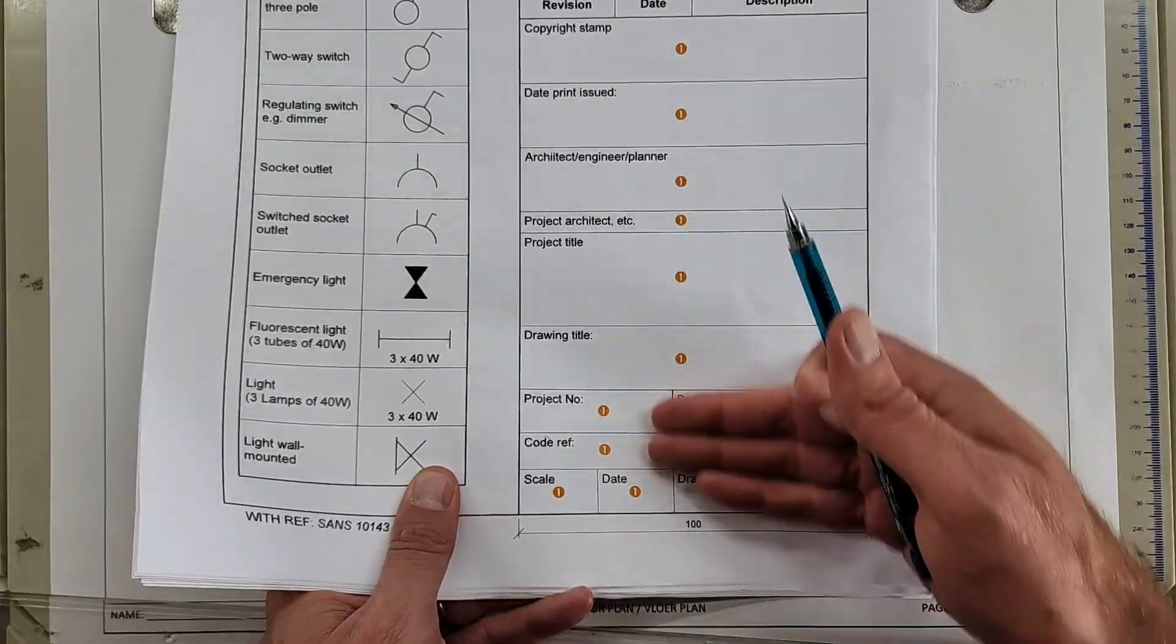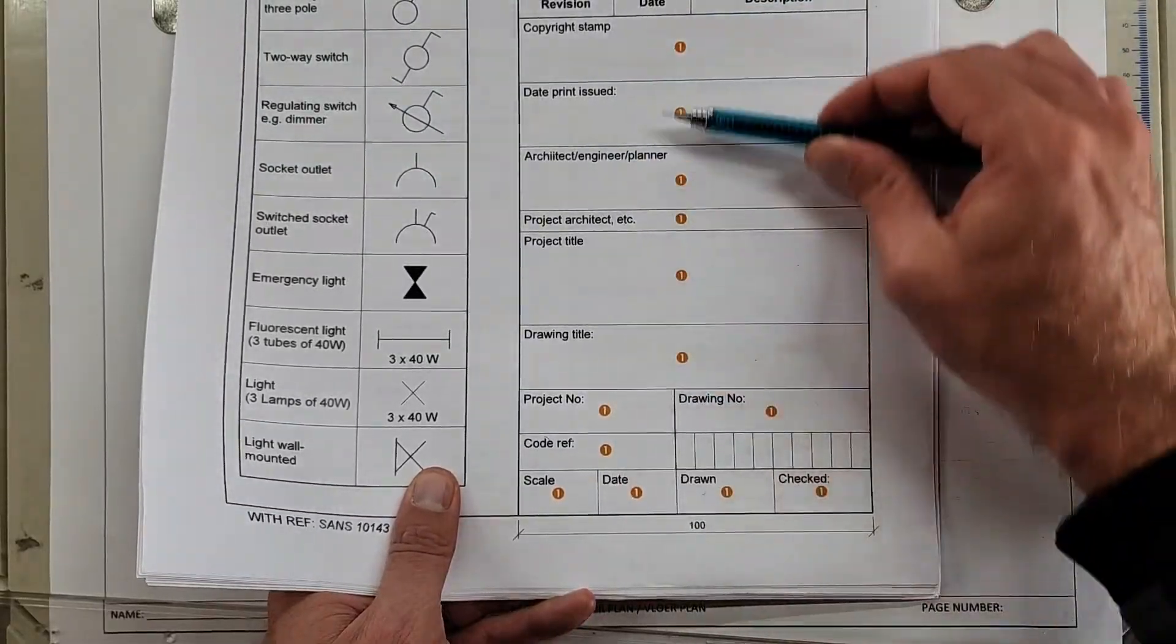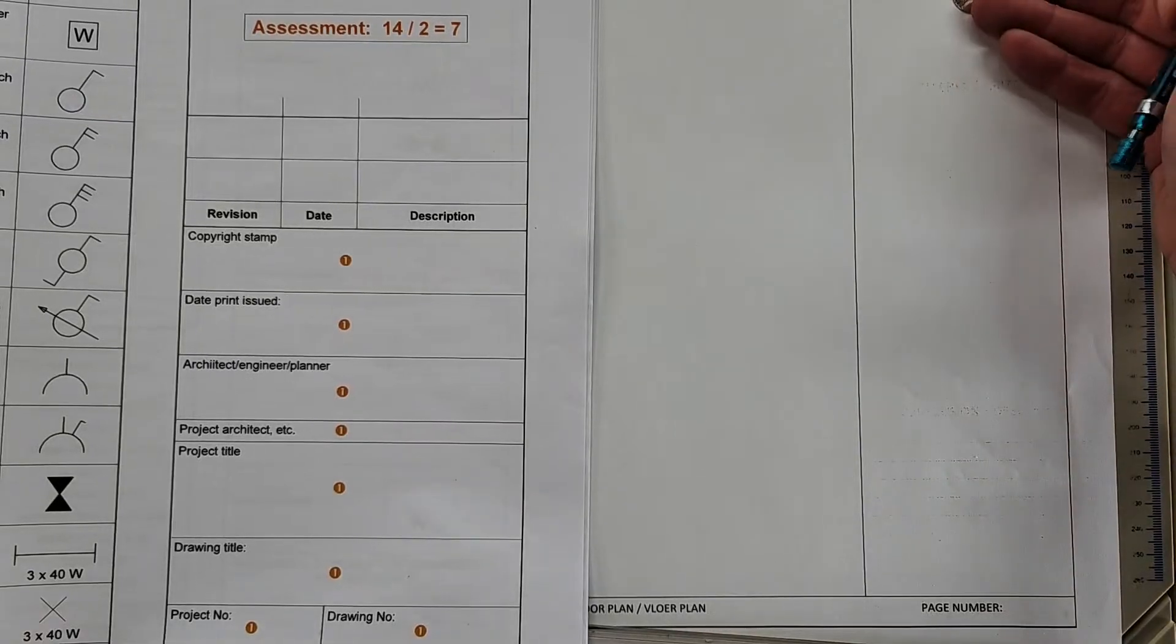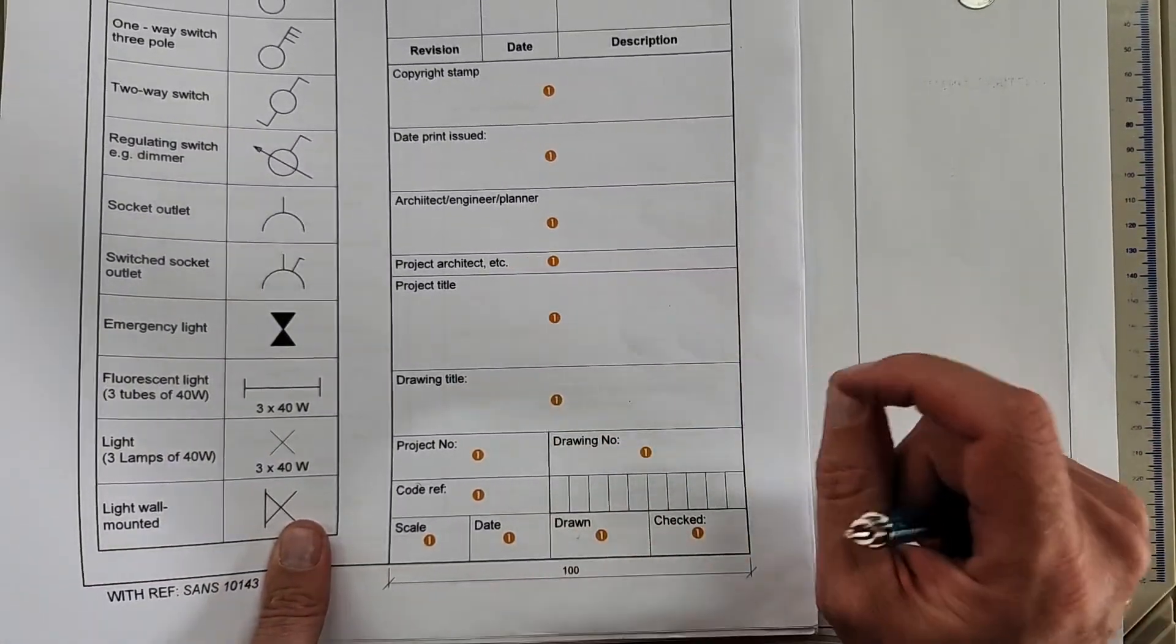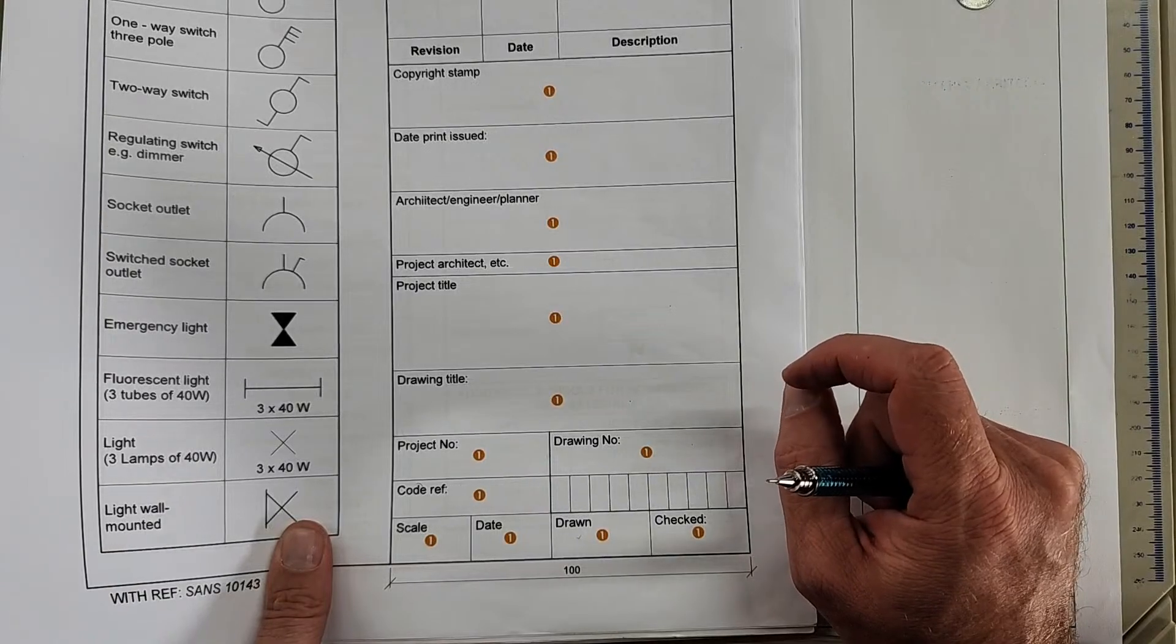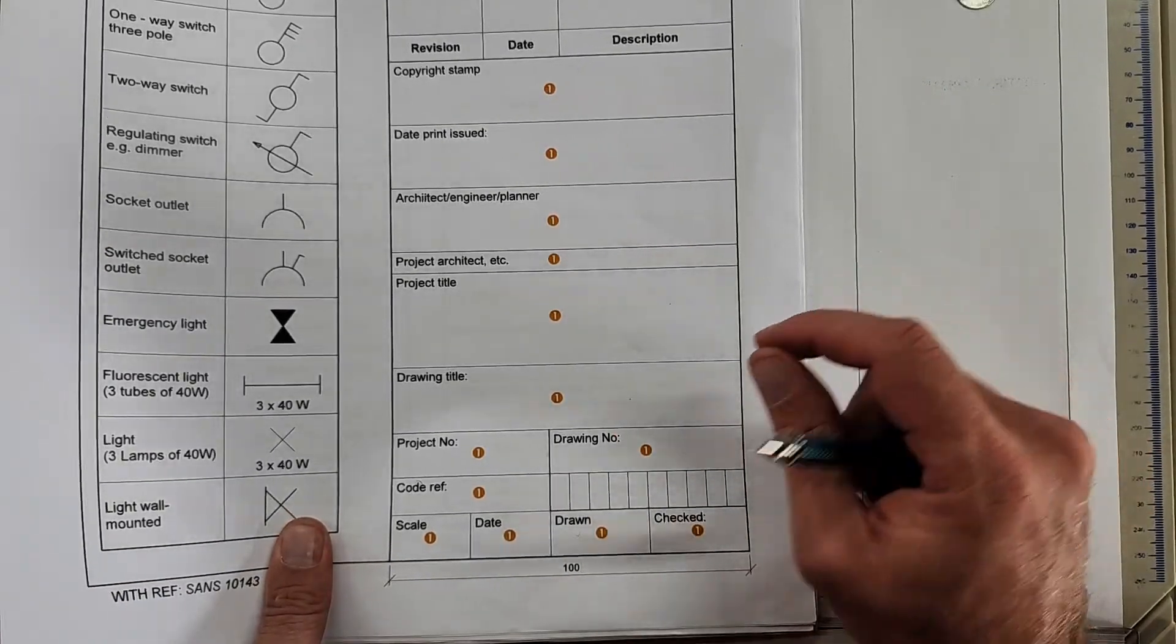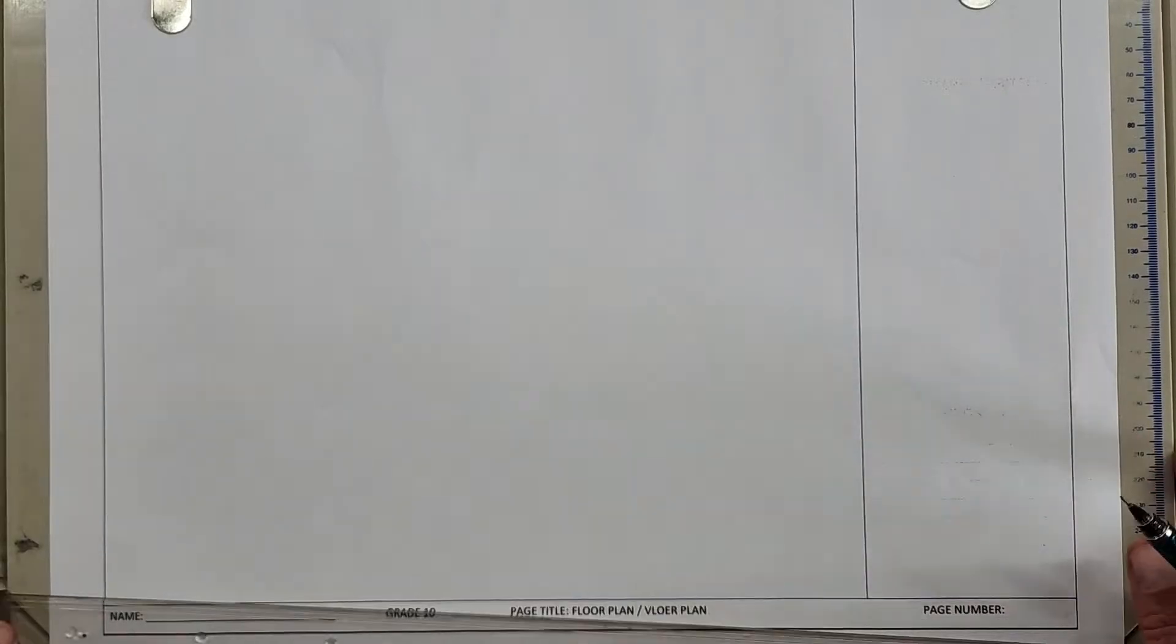This is an example of the minimum things that are required within a title block. You can use this as an example to populate your own title block on the site. Please make sure, other than the example here, you only use print-type font—you're printing, not writing. It's capital letters all the way through.